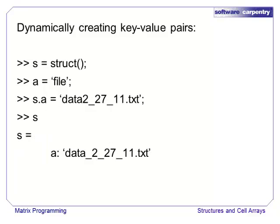Here, we assign the key 'file' to the variable a, and we assign s.a to the filename data2_27_11.txt. Instead of creating a field in the structure named file, the file name is assigned to the field a.